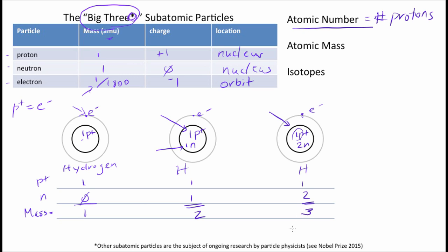So what I've drawn here are three atoms of hydrogen, and they are all what are called isotopes of hydrogen. So, by definition, they have the same atomic number, right, they all have the same number of protons, different number of neutrons.